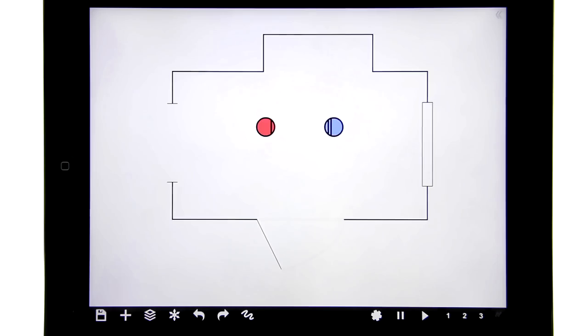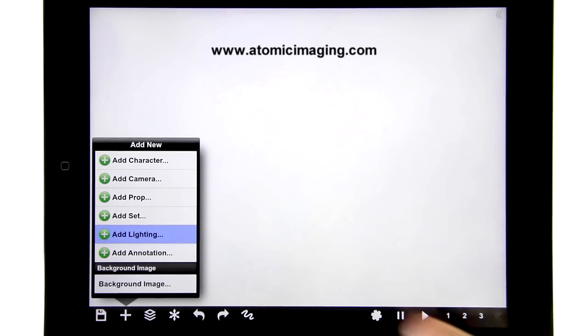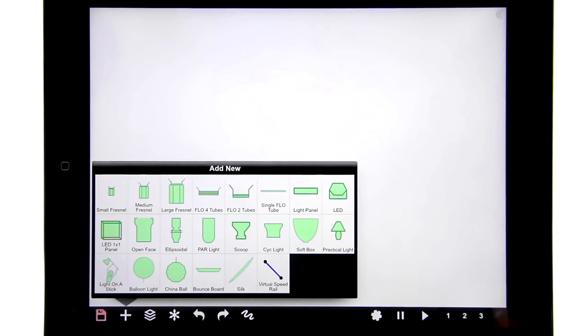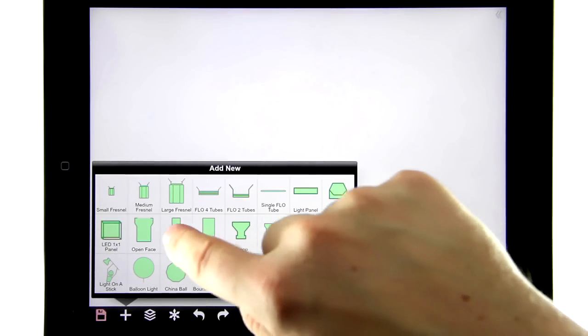That's really all there is to set designing, so let's switch to the lighting designer. Ari Golan from Atomic Imaging in Chicago sent us these symbols here, and they're pretty self-explanatory. I'm gonna add an ellipsoidal.